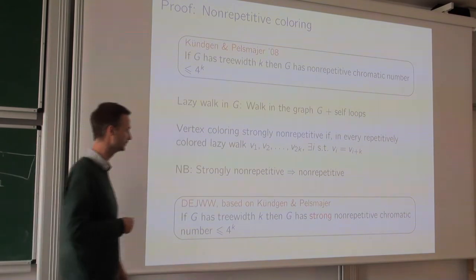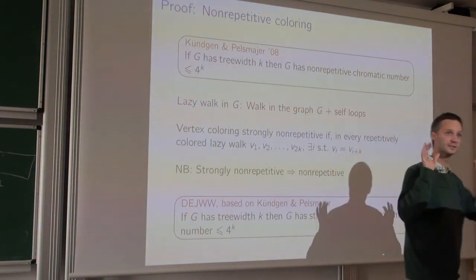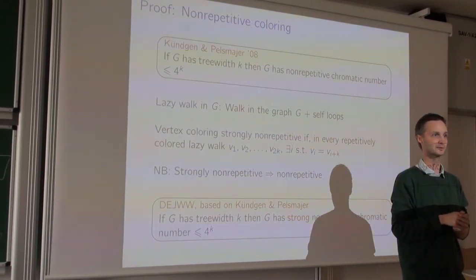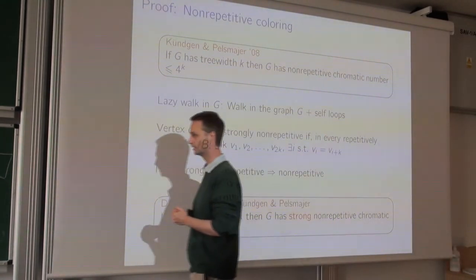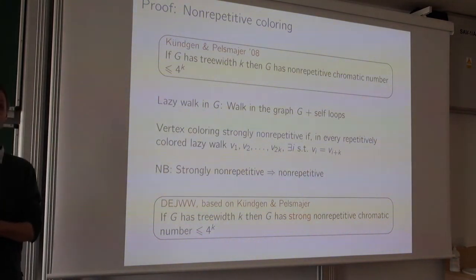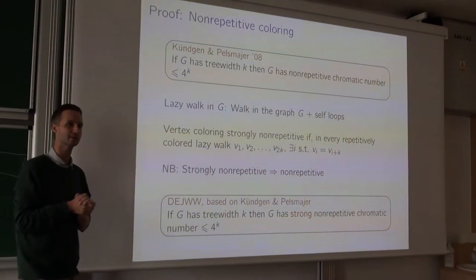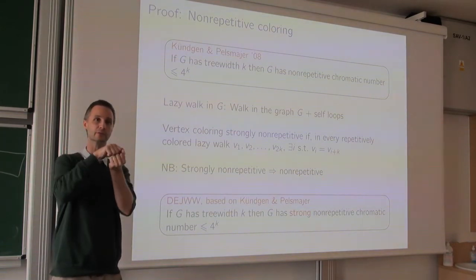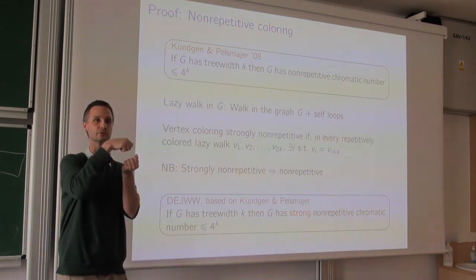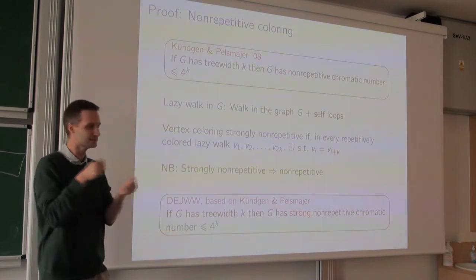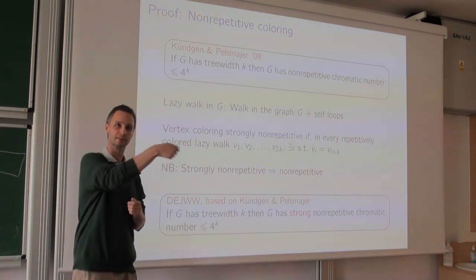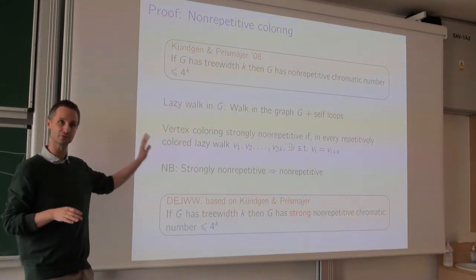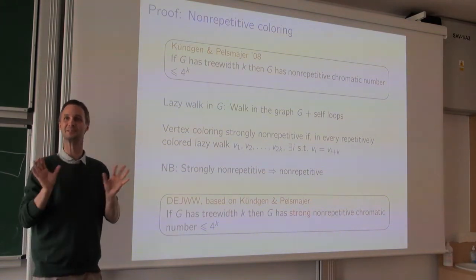First, recall the notion of lazy walks: a walk where you can also stay on the same vertex (using self-loops). When you do a lazy walk on a graph, if you're on vertex V, you can repeat V several times, then continue. Now we define a stronger notion of non-repetitive coloring. A coloring is strongly non-repetitive if the following holds: whenever you have a repetitively colored lazy walk — where the color sequence on the first half equals the second half — there exists some vertex VI in the first half which equals the vertex at the corresponding position VI+K in the second half.